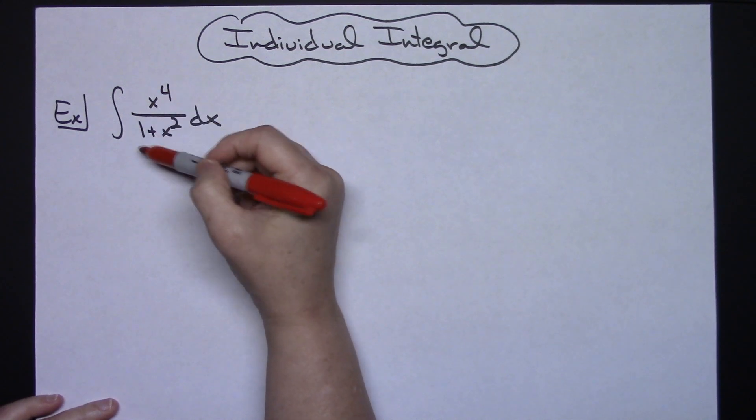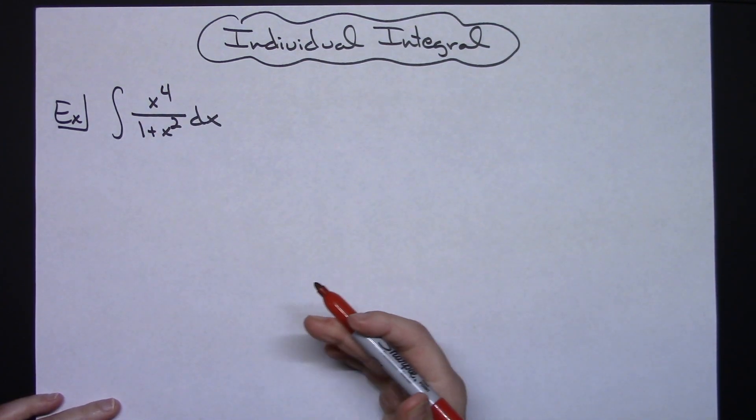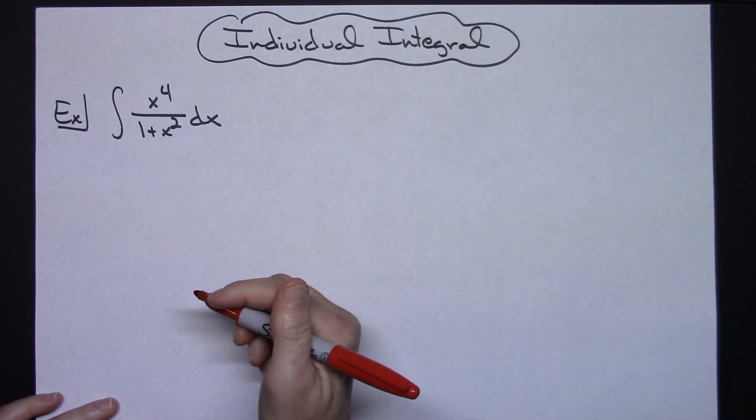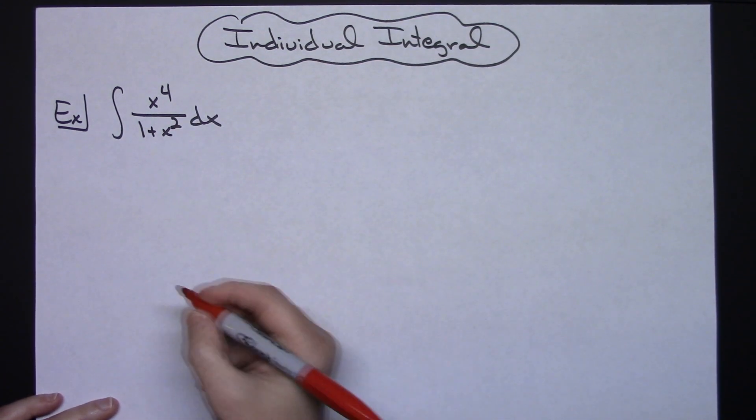Now the fact that this is a rational expression, probably the easiest most straightforward approach would be to do some long division and come up with an equivalent expression that is going to integrate a whole lot easier.